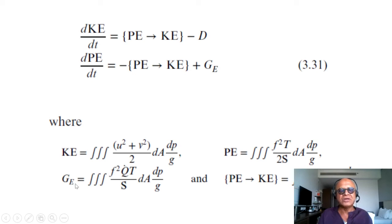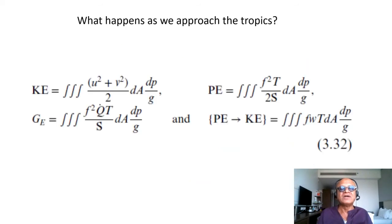You're creating potential energy with these terms, which have an f in the generation terms. As f goes to 0, you have a minimum in energy generation and storage of potential energy. These are simple arguments, but we can understand them conceptually and move on to the actual physics. What actually happens when we approach the tropics? The KE, PE, and GE terms are there with the potential to kinetic energy translation term related to vertical advection of heat.